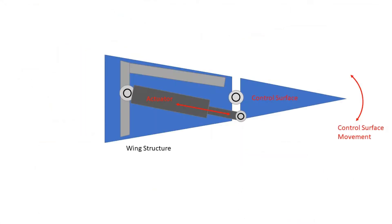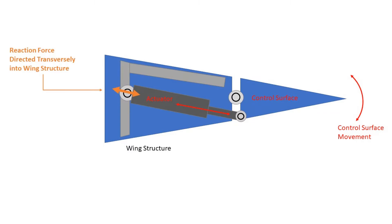The use of carbon fiber in the wing structure necessitates a redesign of the control surface actuation systems. In conventional aluminum wing structures, the hydraulic actuator can be mounted directly to the wing structure, as shown here. Aerodynamic forces imposed on the control surface are reacted through the actuator and transversely into the aluminum wing structure.